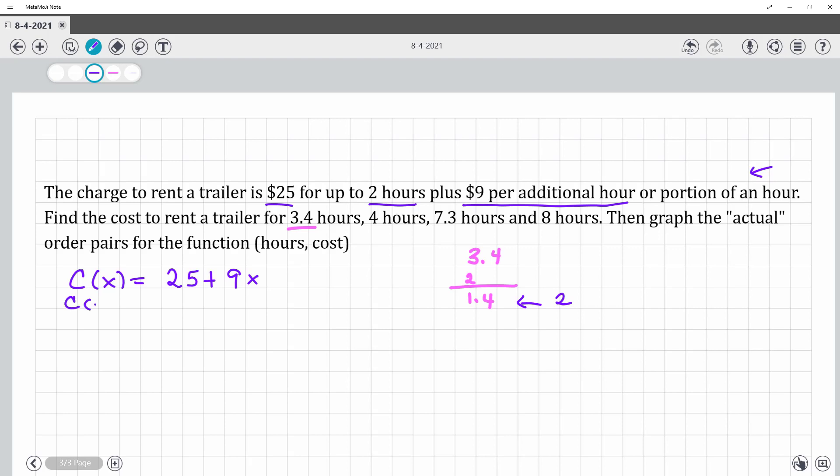So you would plug in 2.5 plus 9 times 2 and you would get 43. For 4 hours it's going to be the same, right? So this is what you're paying already. So 4 hours would still be plugging in 2 additional.